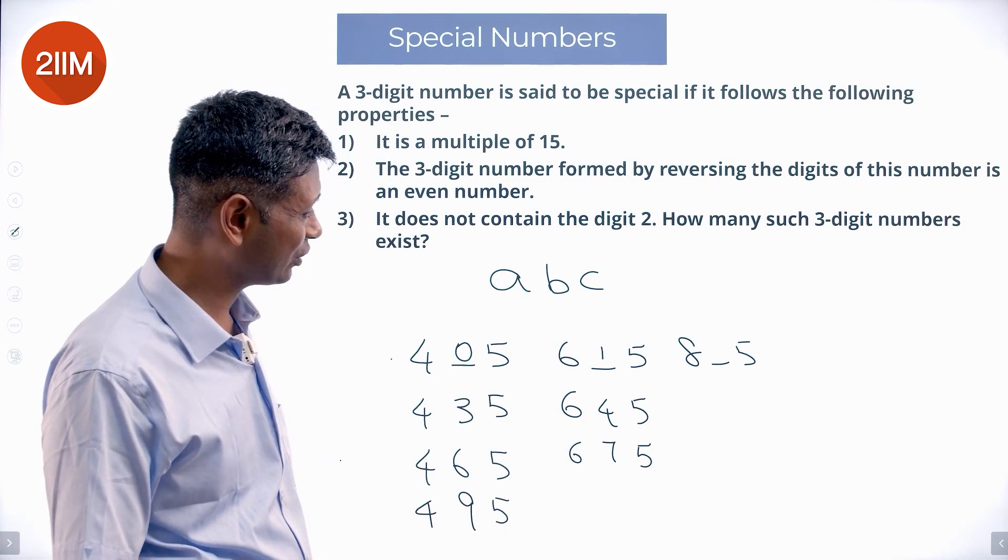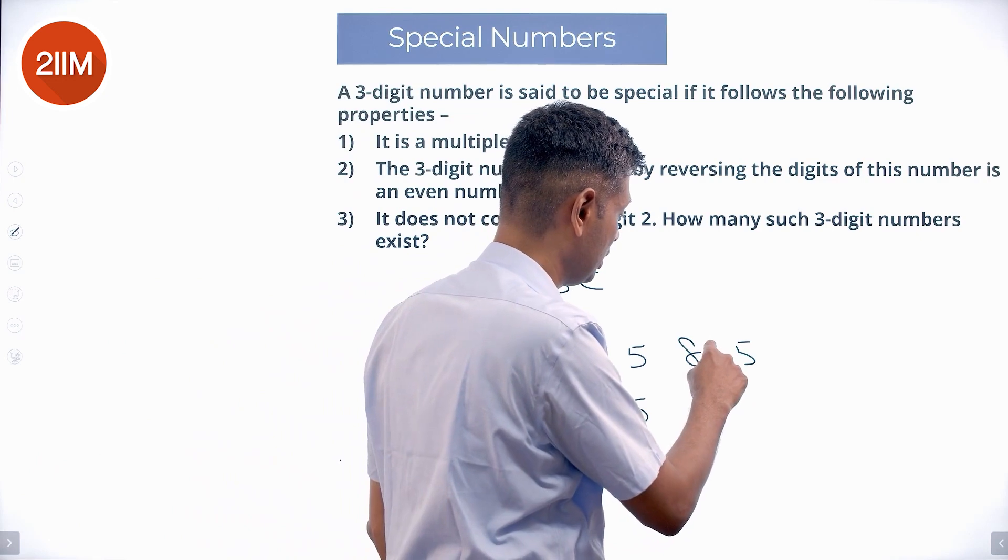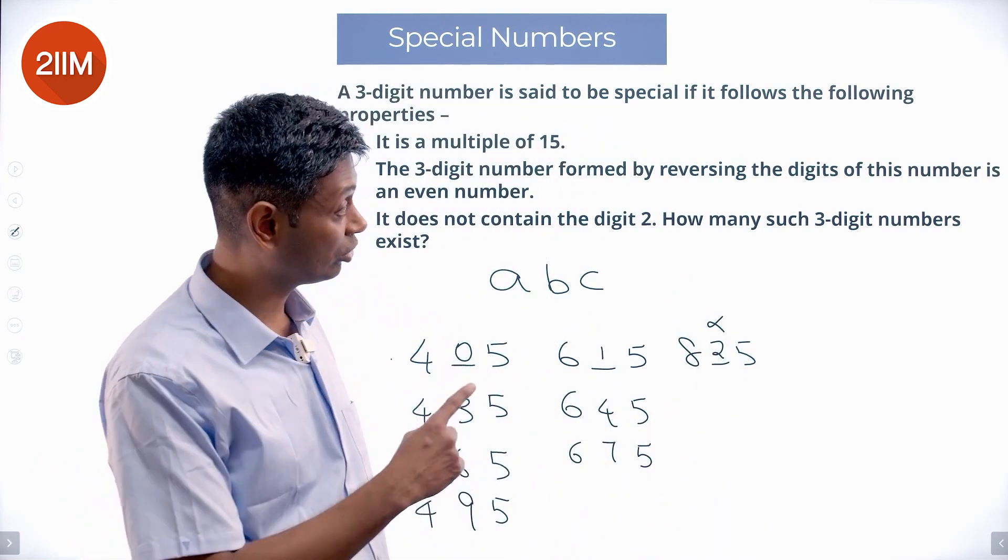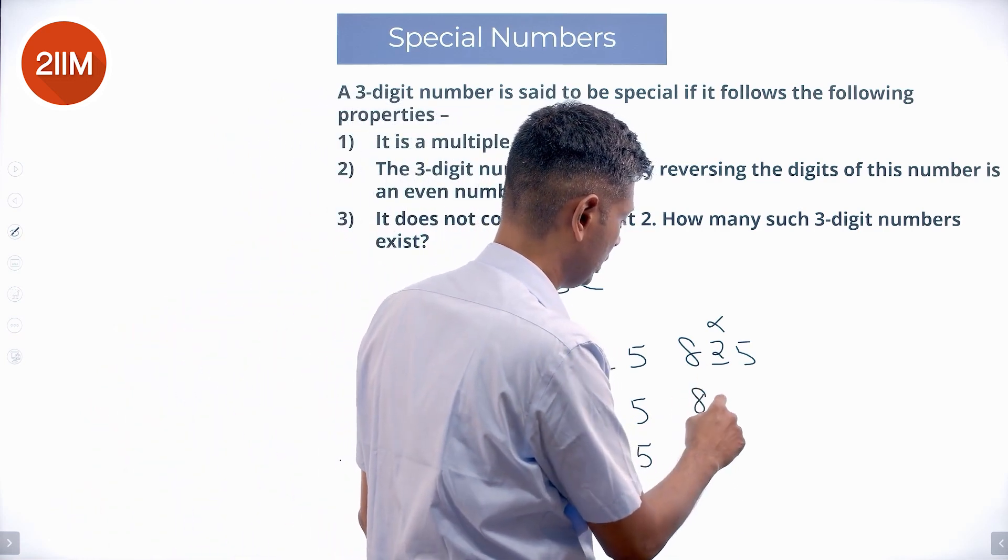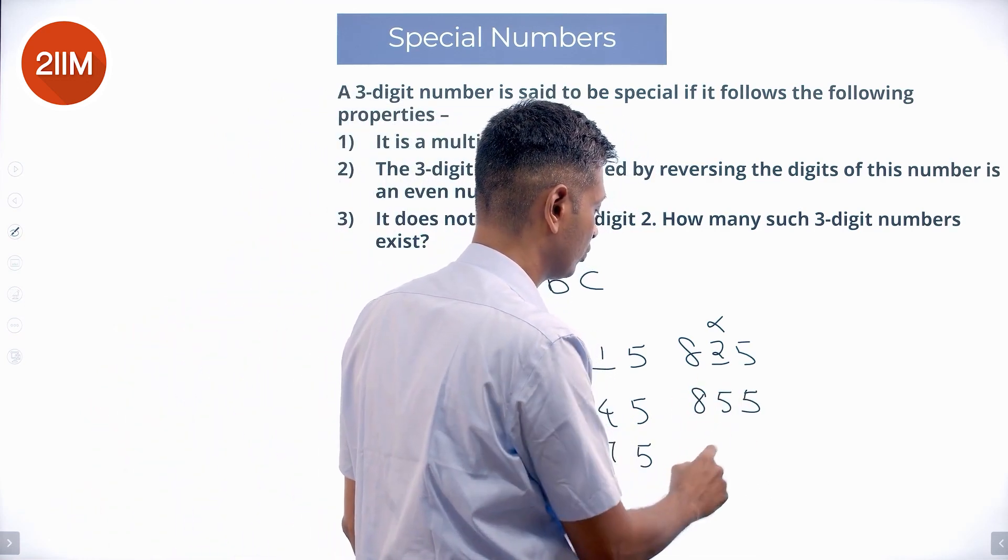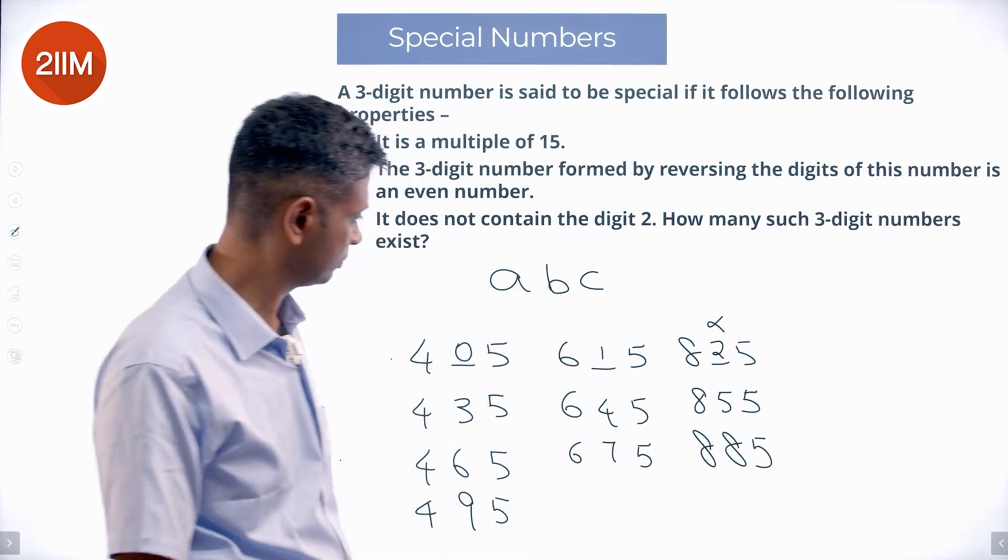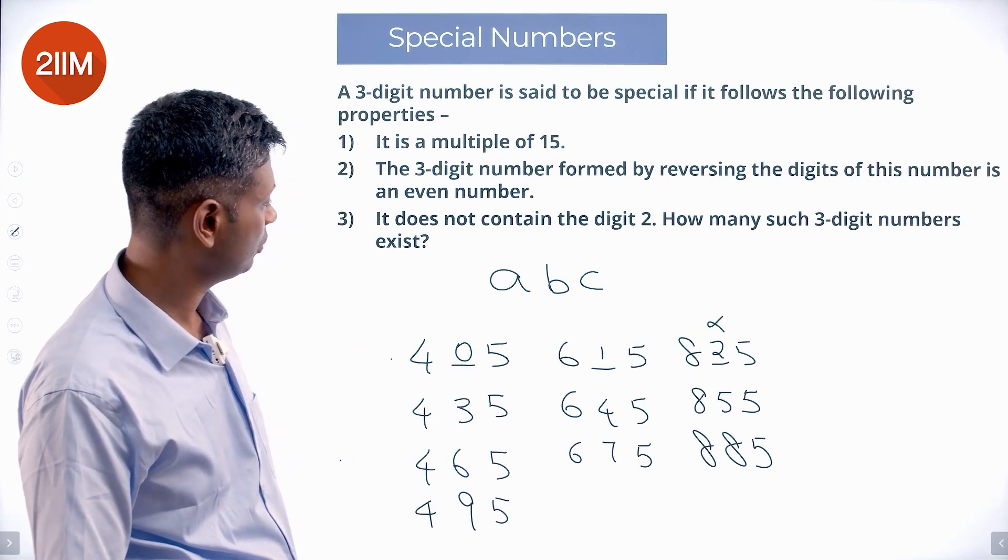8-5. 8 plus 5 is 13. 13 plus 2 is 15. So 8-2-5. But this can't happen because we cannot have a 2 in the middle. We cannot have a 2 in this number. 8-5-5 will work. 8-8-5 will work.